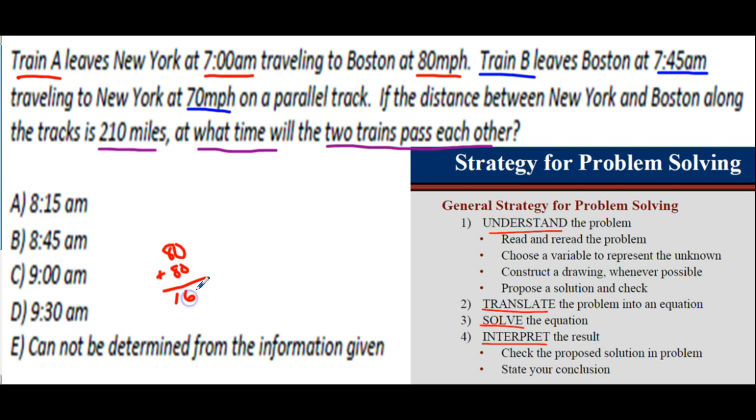In the meantime, the blue train left at 7:45 a.m. Now it's been traveling for at least one hour, so it's definitely gone the 70 miles already, because this is like one hour and 15 minutes to get to nine o'clock. So these two values together are 230, that's bigger than 210, so these trains have already passed each other. We got to pick a shorter time.